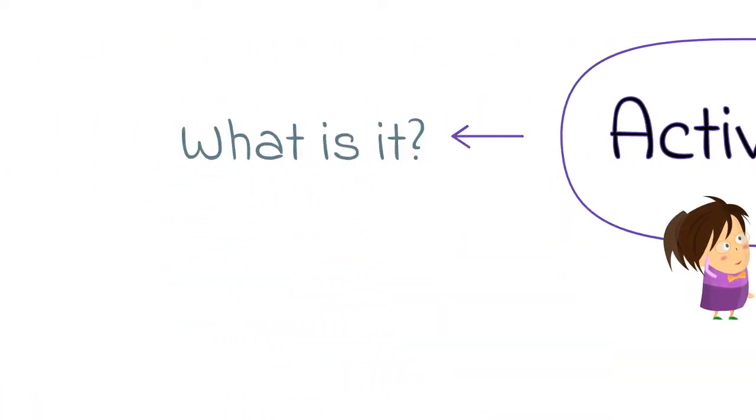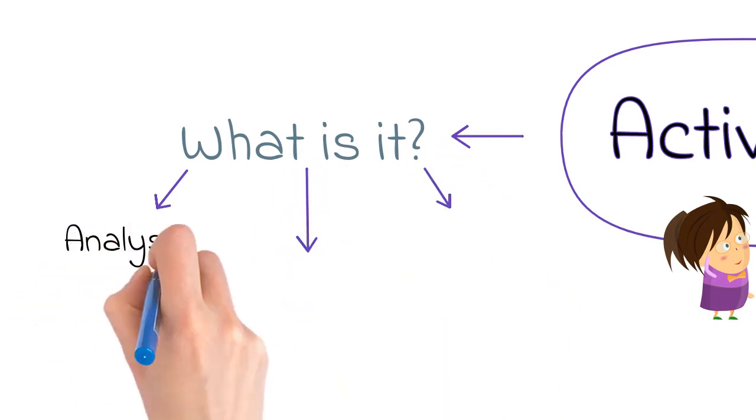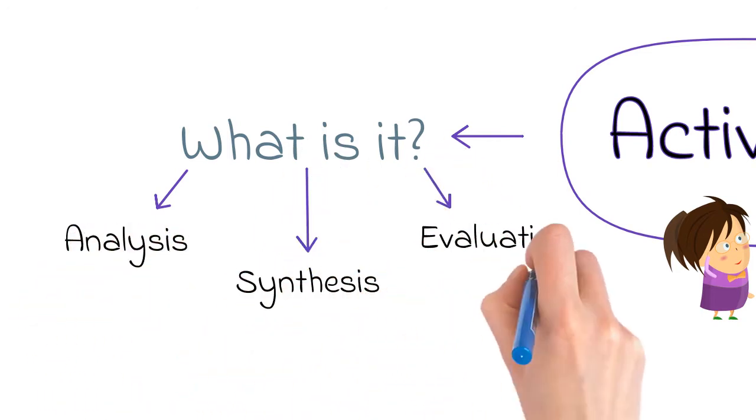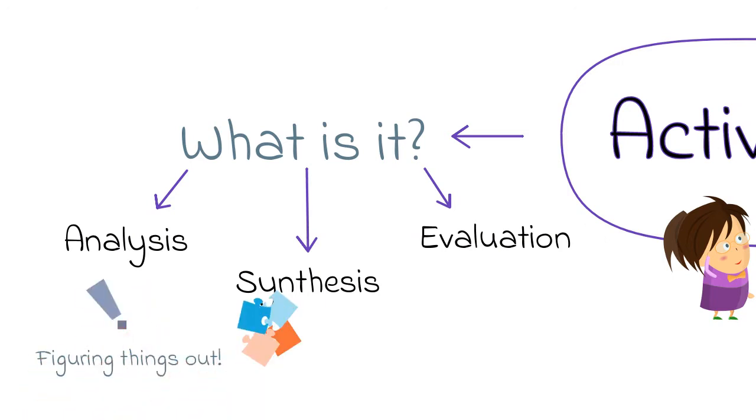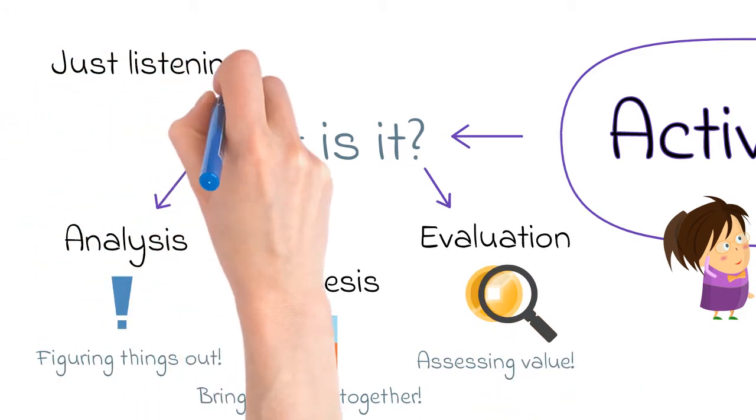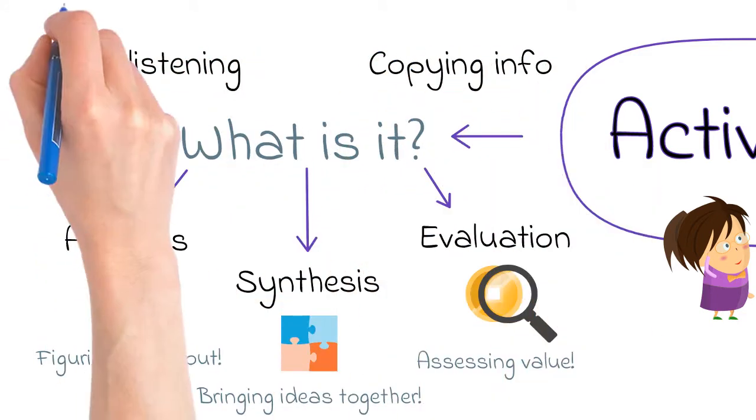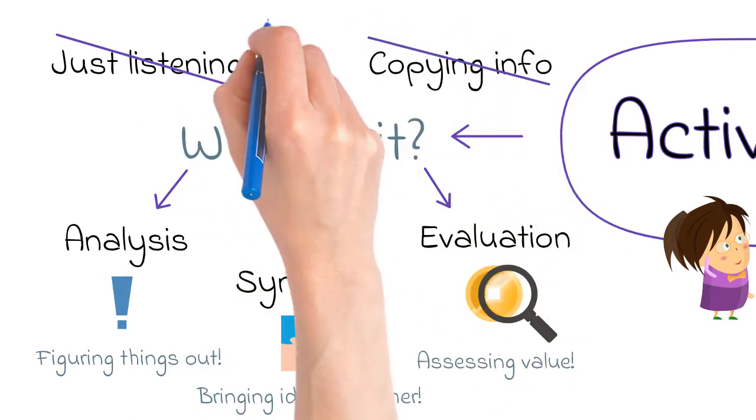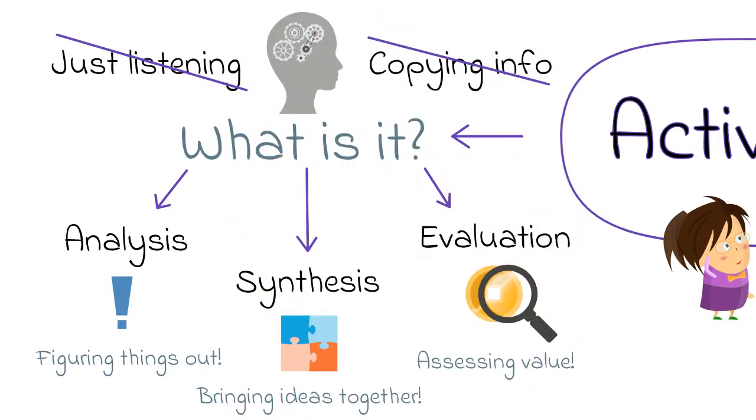First, let's define active learning. Active learning is when you engage in activities that promote analysis, synthesis, or evaluation. Or in other words, doing things and thinking about what you're doing. The idea is that this kind of learning is better than learning simply from listening, or copying notes, or following instructions, because it goes along with our current understanding of how the mind and brain operate during the learning process.